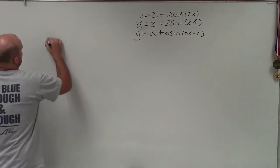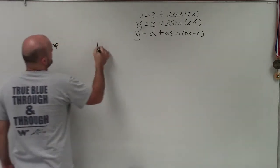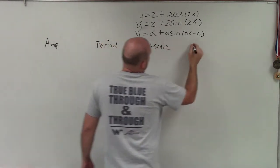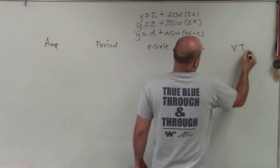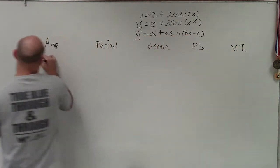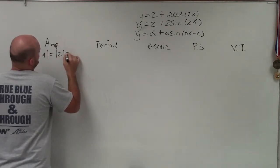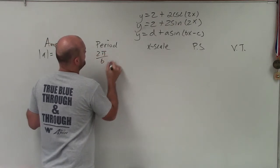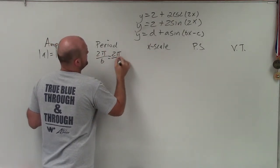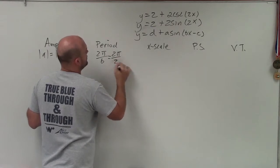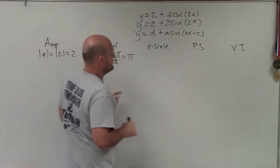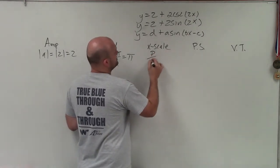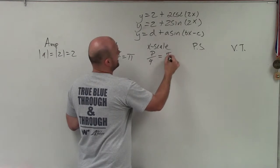Let's write them all out: amplitude, period, x scale, phase shift, and vertical transformation. My amplitude is the absolute value of a, which is the absolute value of 2, equal to 2. The period is 2 pi divided by b, where b is 2, so it's 2 pi divided by 2, which equals pi. The x scale is period divided by 4, so pi divided by 4.